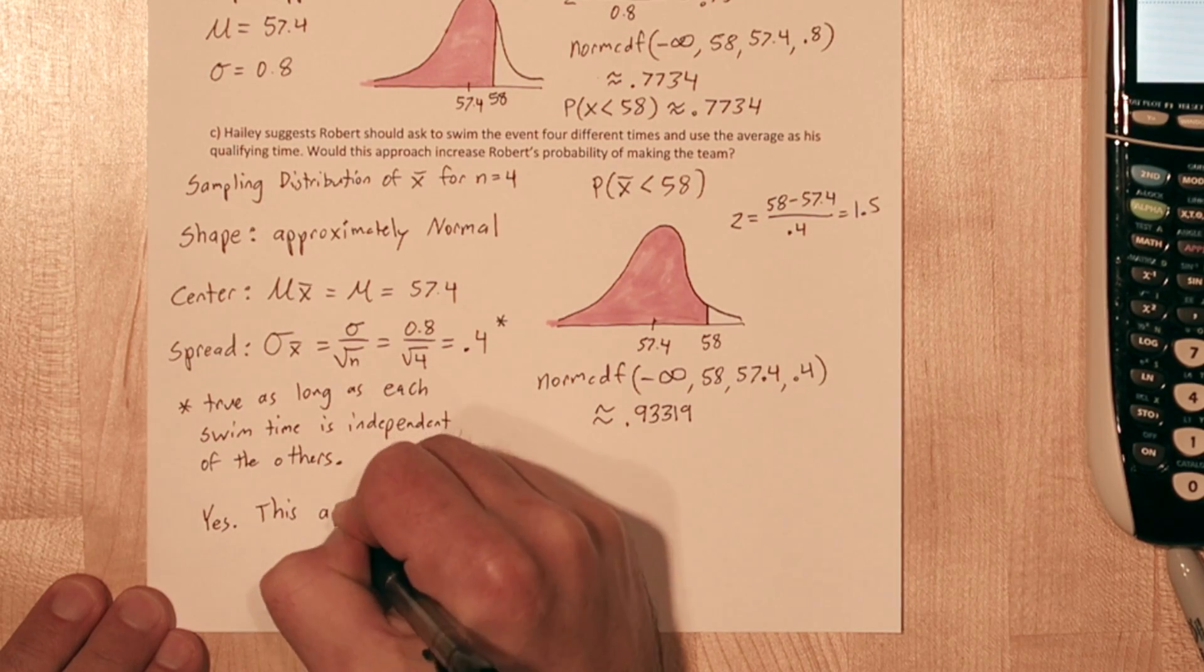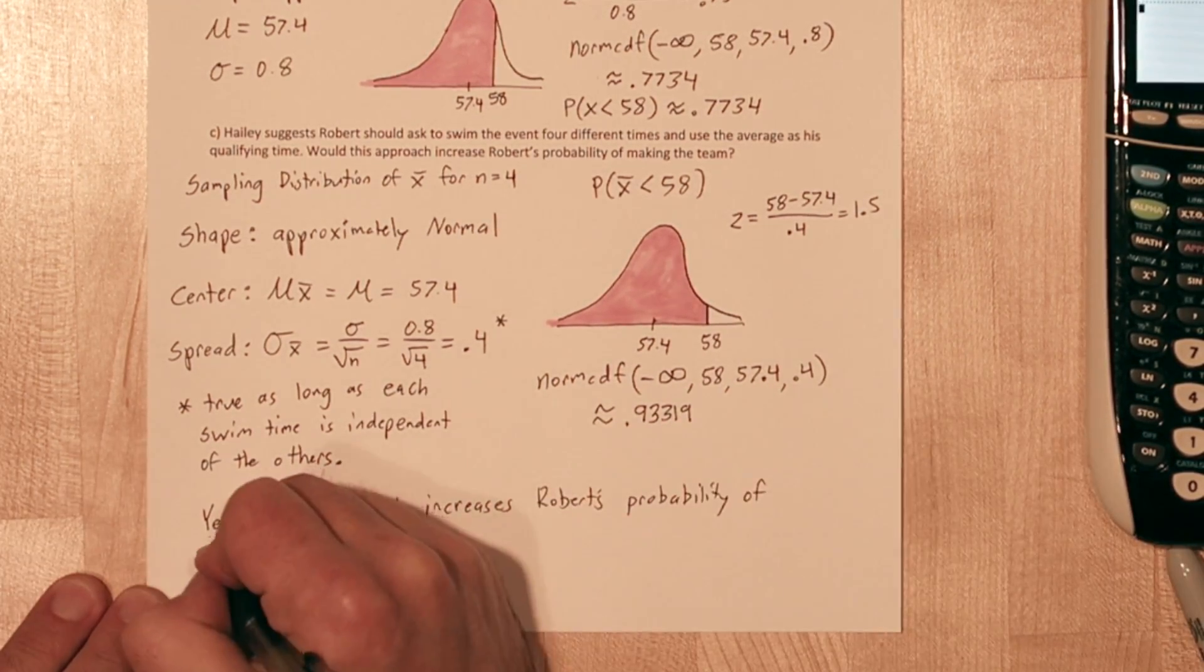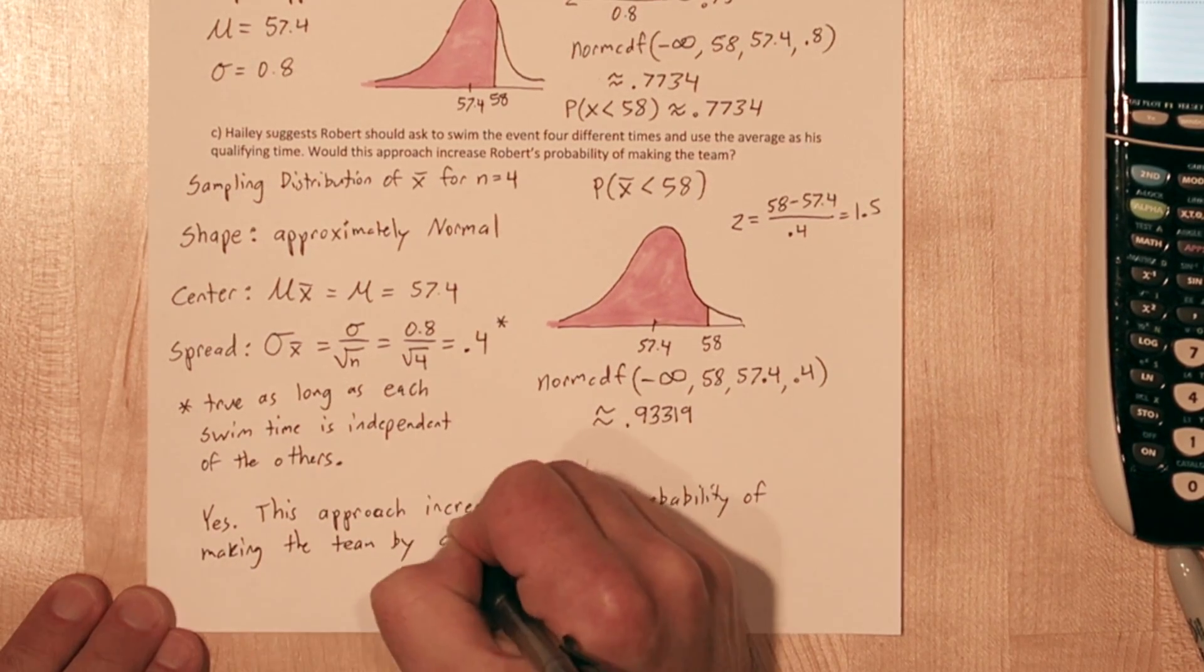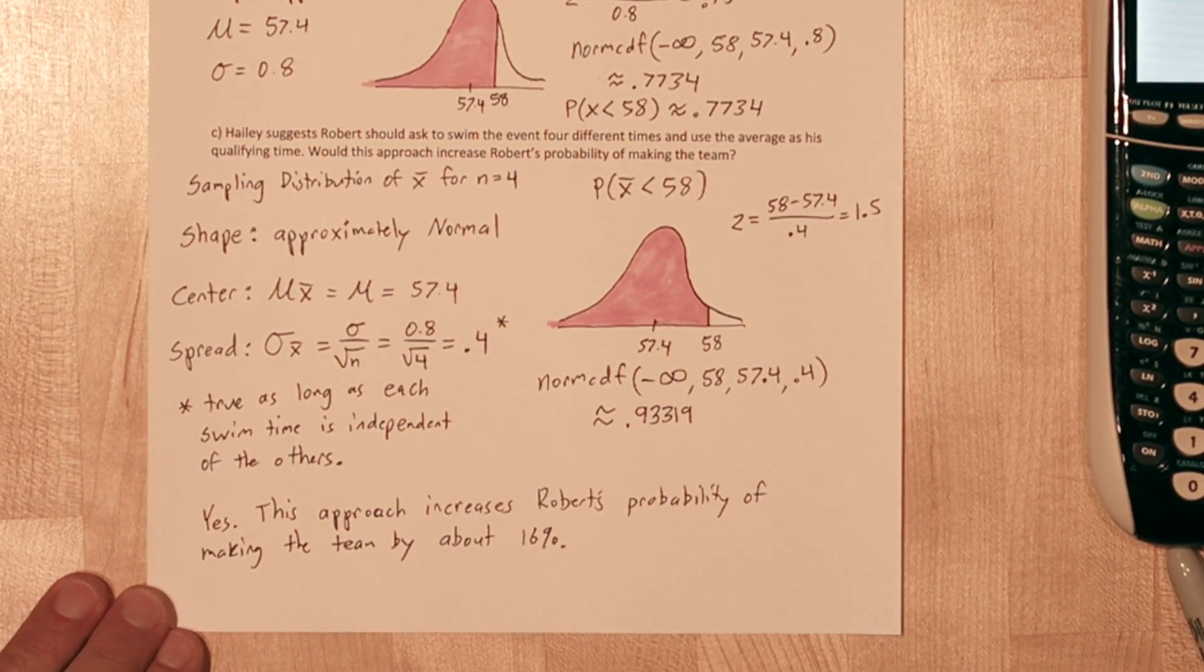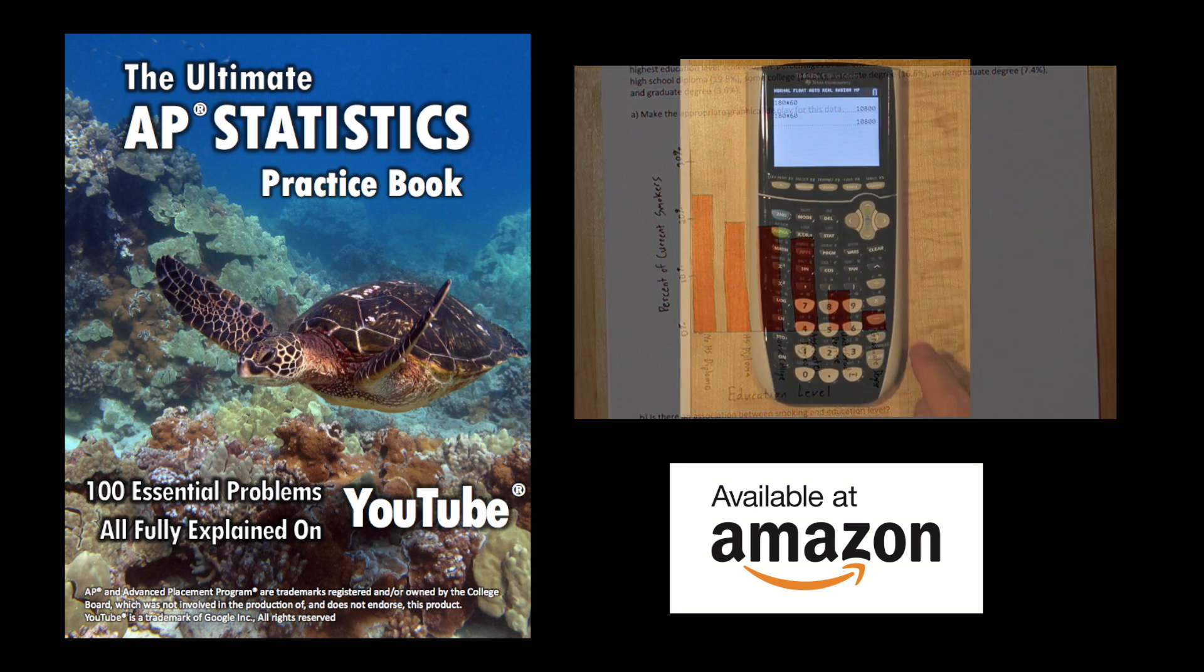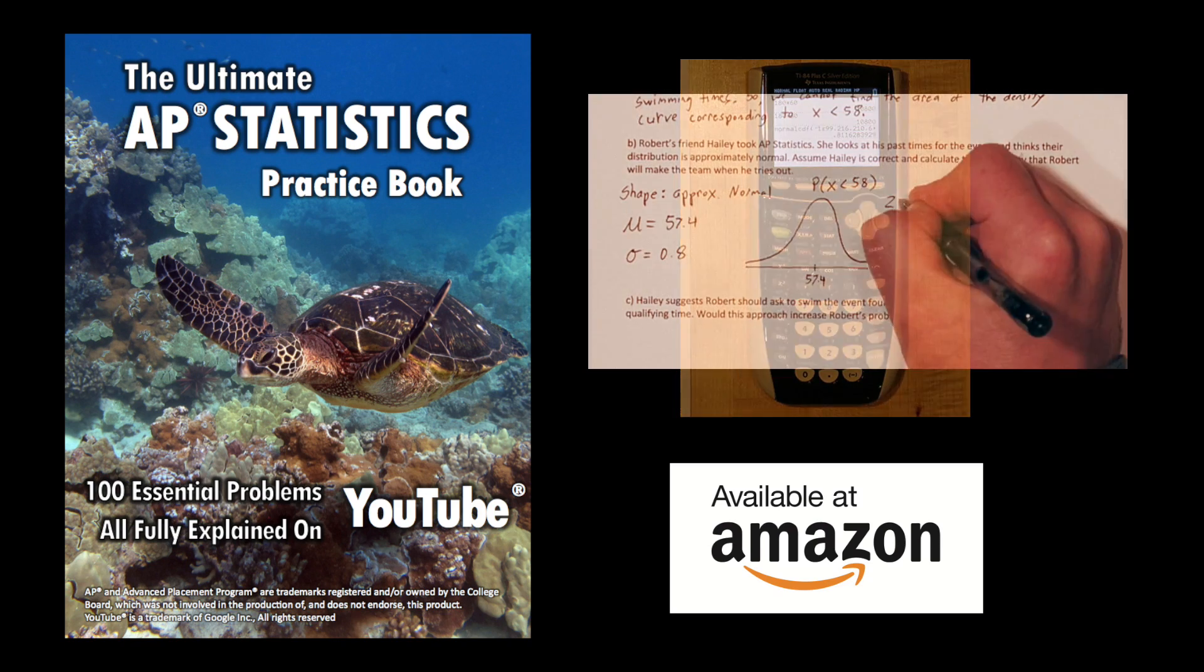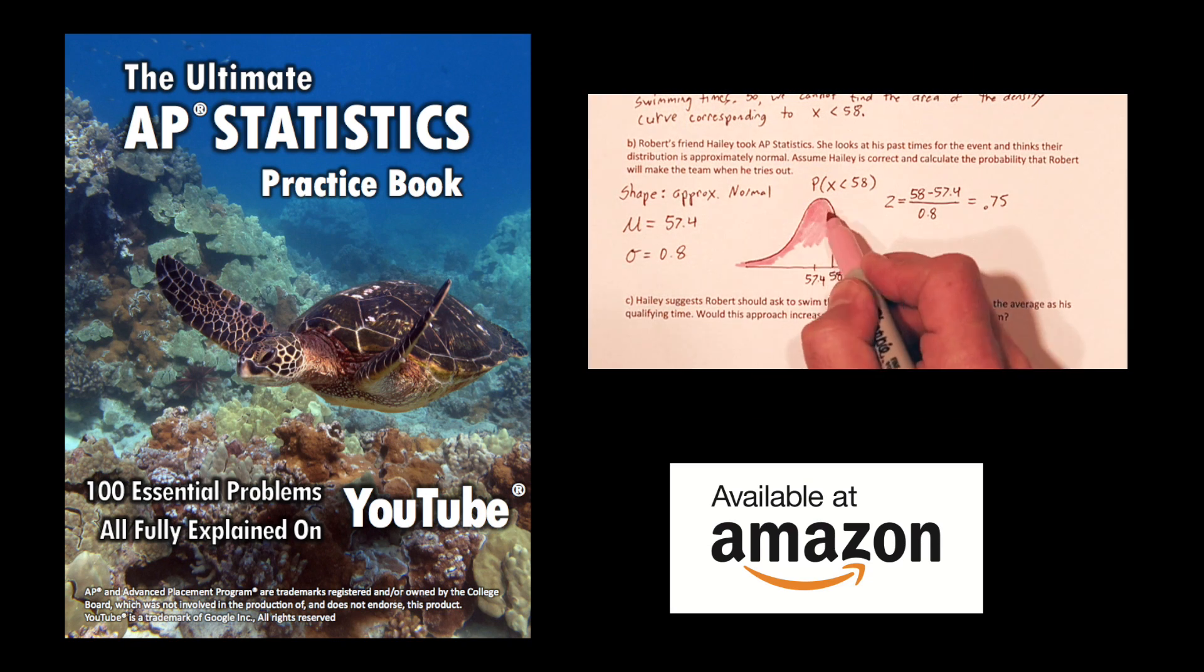So to answer the question, would this approach increase Robert's probability of making the team? Yes. This approach increases Robert's probability of making the team by about 16%. Like this video? Check out my book, The Ultimate AP Statistics Practice Book. It's got 100 problems, all with videos just like this. You can pick it up on Amazon.com.